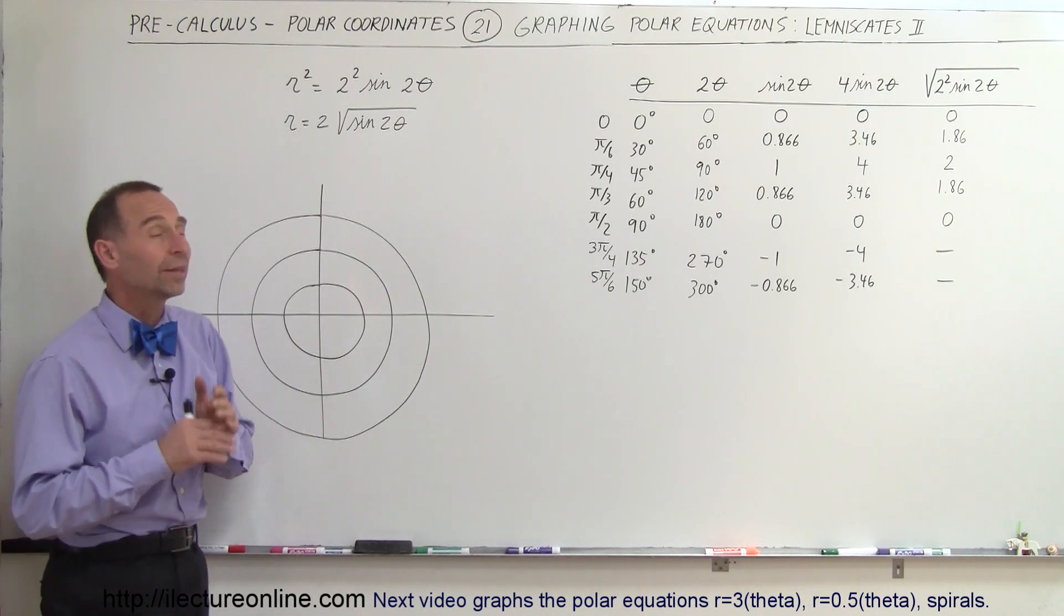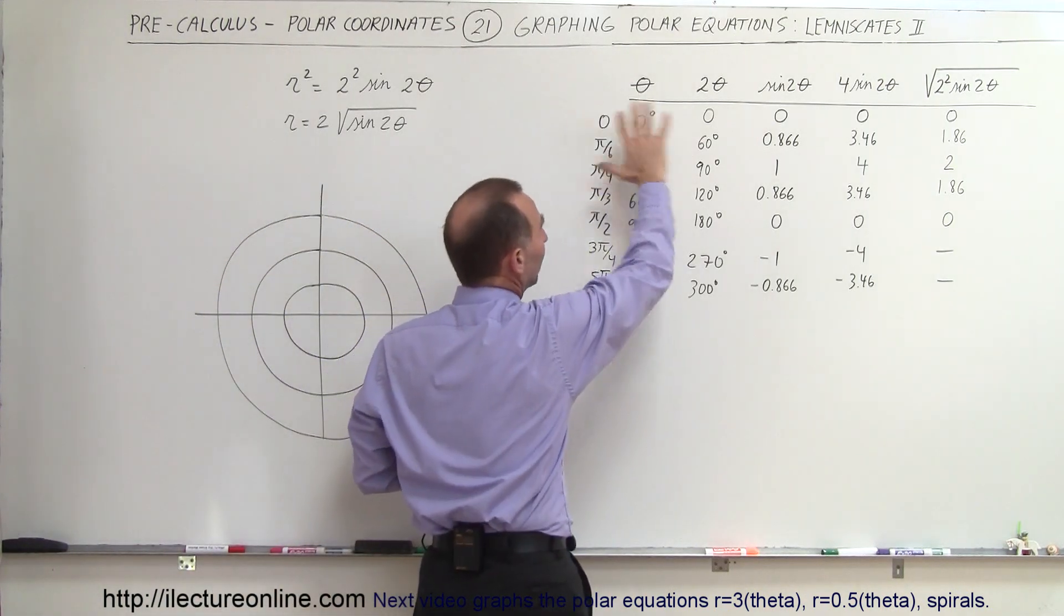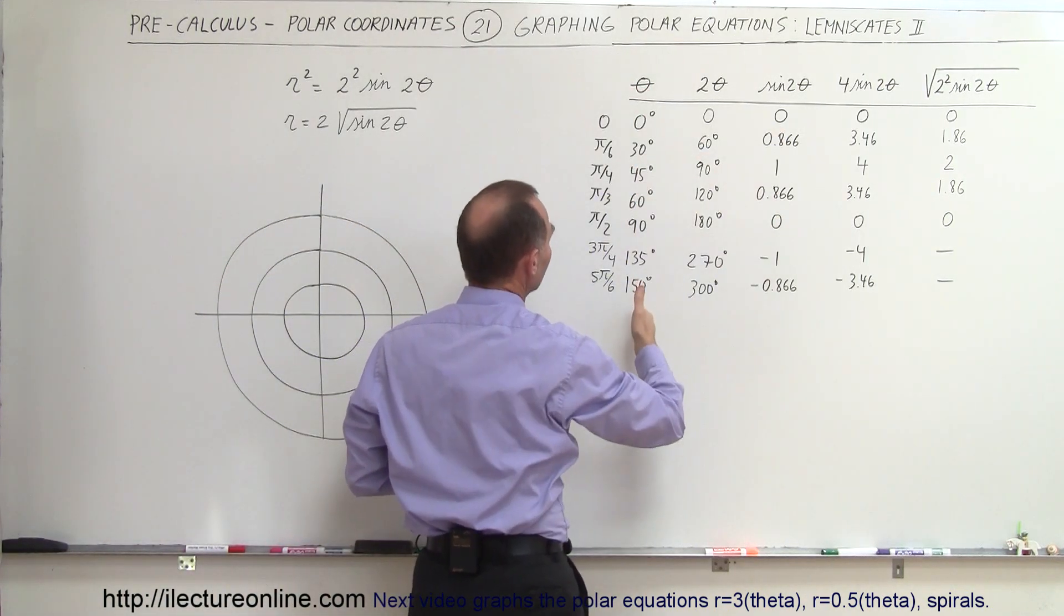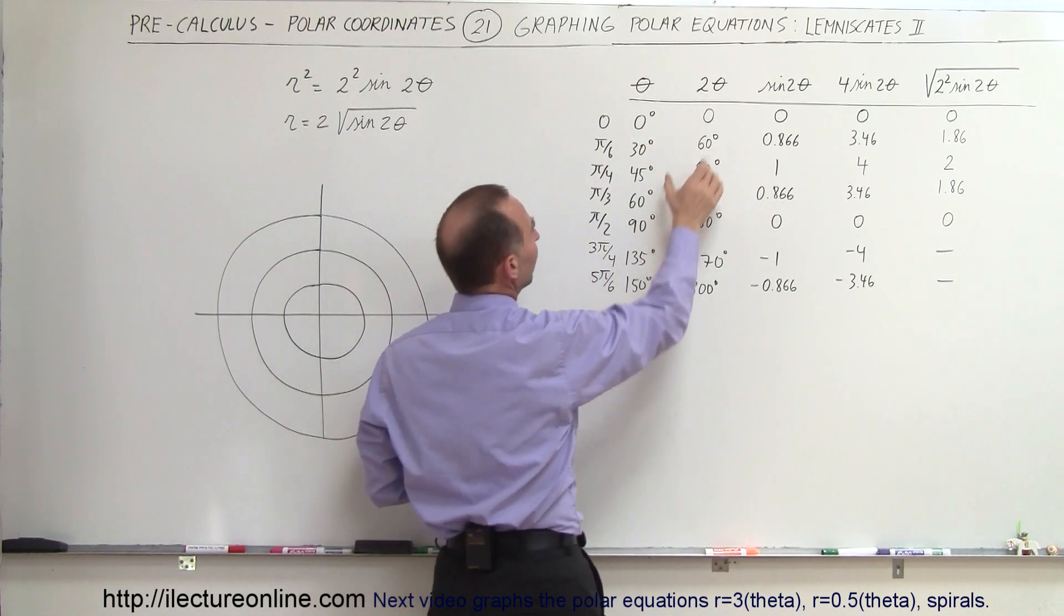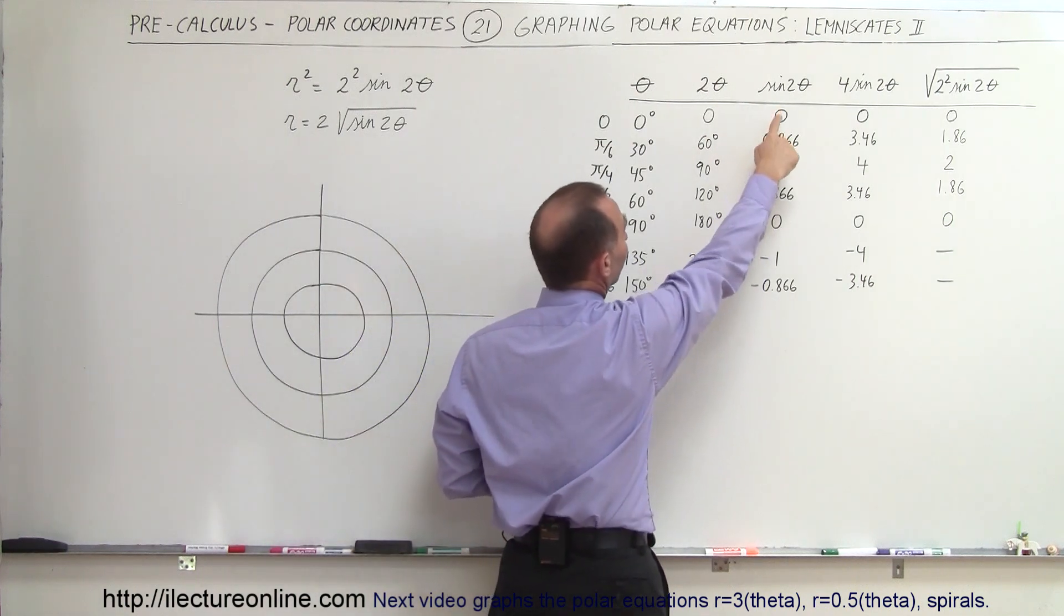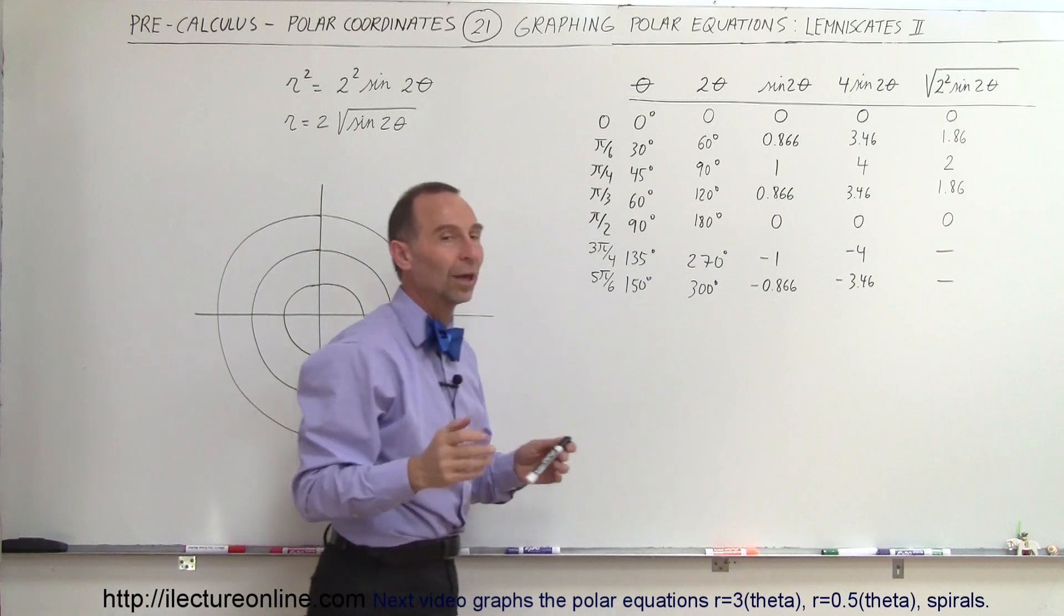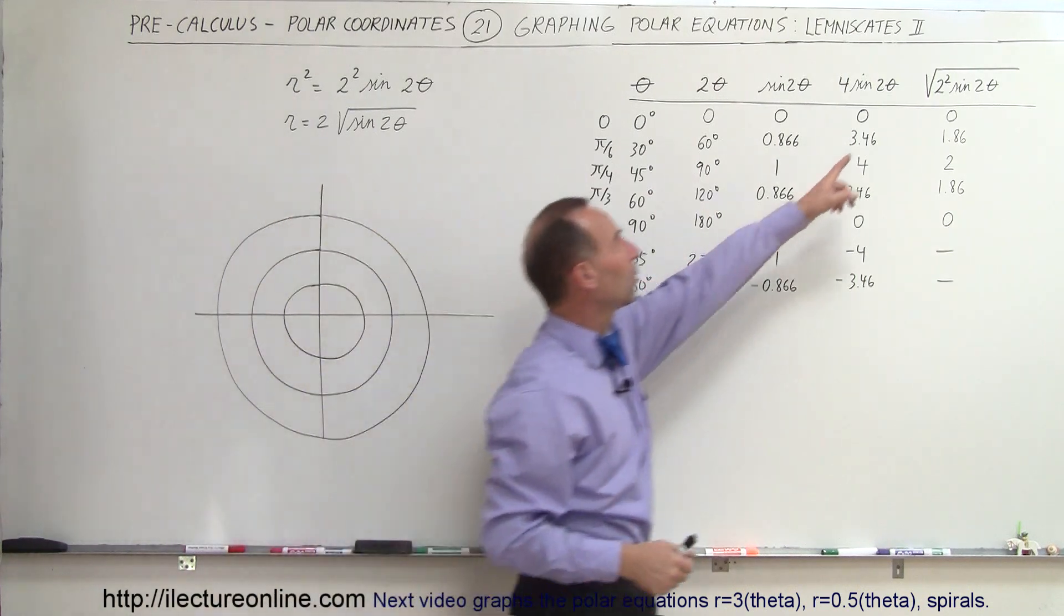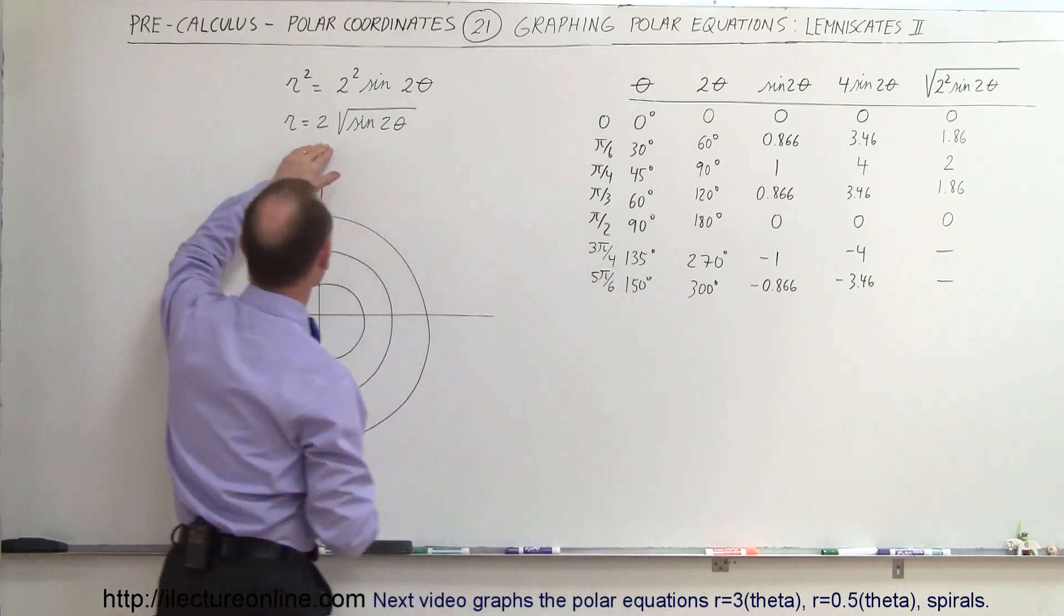So what does that look like? Well to help us guide along we have a table here of values: we have theta, the various values for the angle either in degrees or in radians, then twice theta because we have 2 theta in the equation, then the sine of 2 theta and 4 times the sine of 2 theta and then the square root. So that would then be r equals the square root of 2 squared times the sine of 2 theta which ends up being this equation right here.